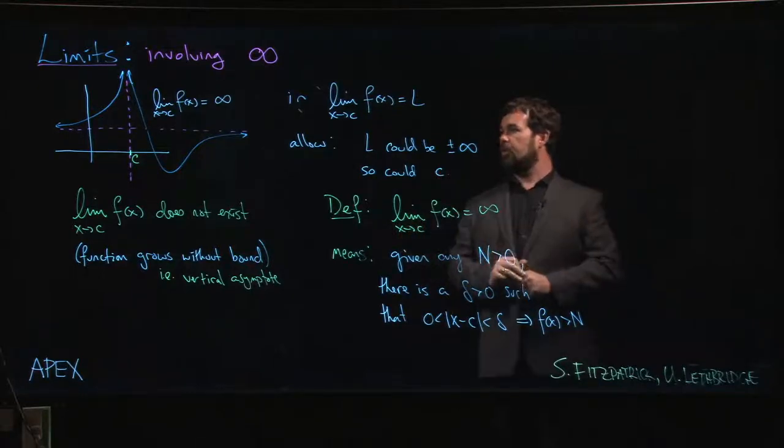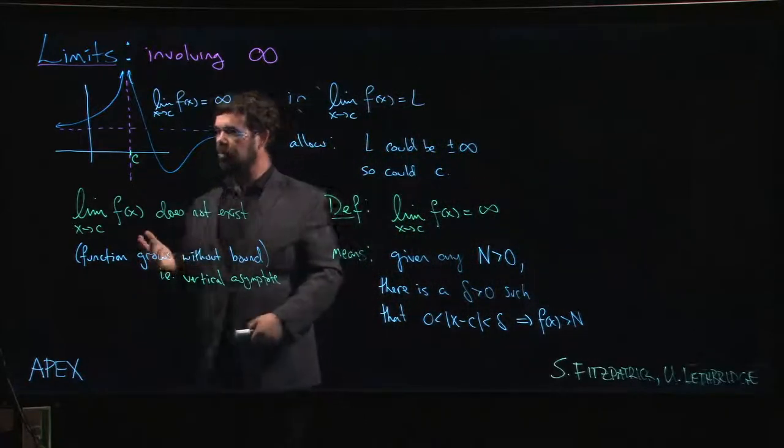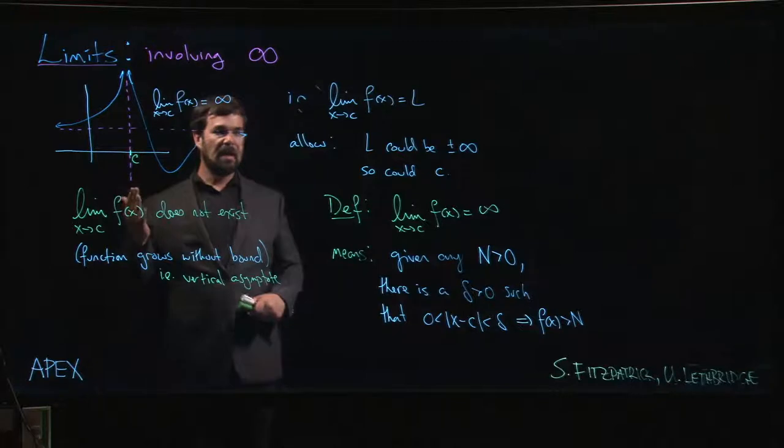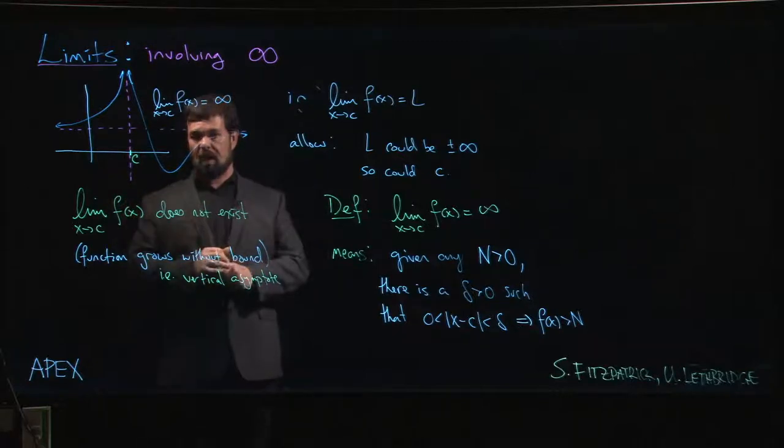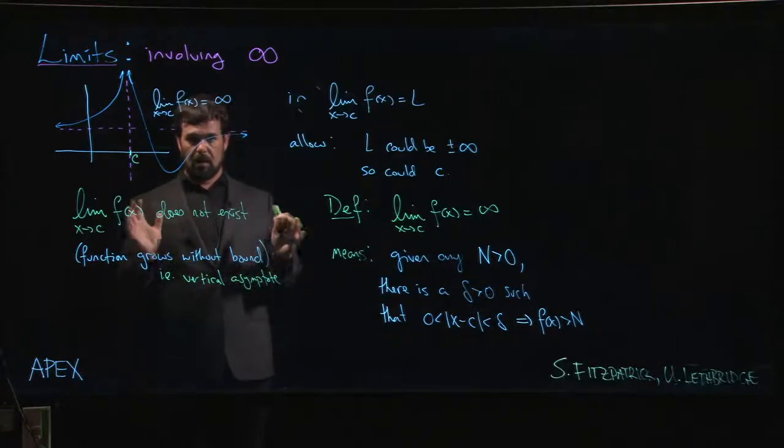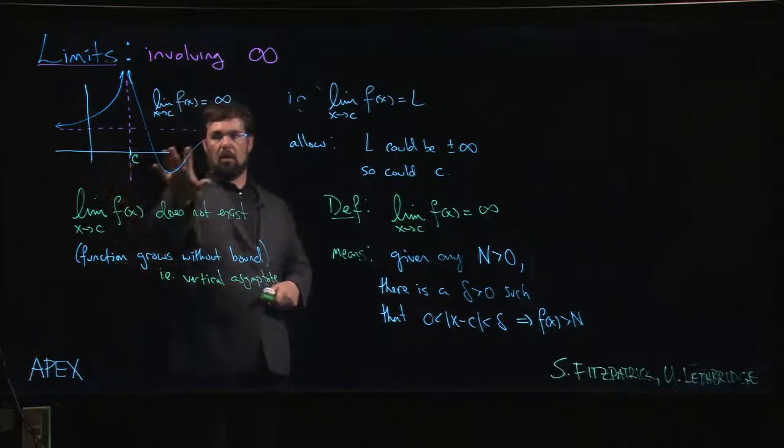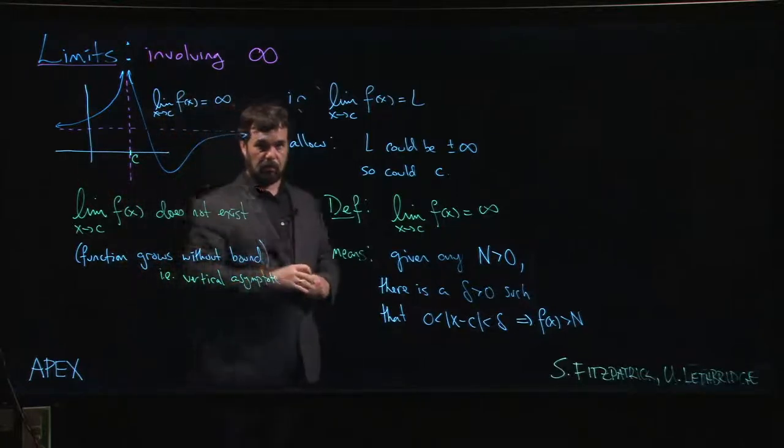This is what it means to have an infinite limit. Really all it's telling us is that there is some place where the function is getting really big. Typically this is happening because you've got some sort of division by zero going on in the expression that defines your function. We'll look at a few examples and then we'll move on to talking about what happens when x goes to infinity.